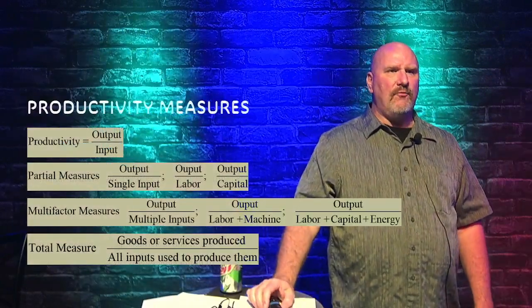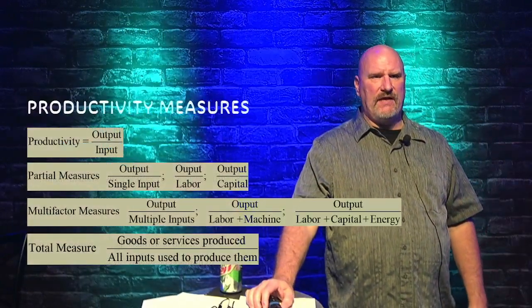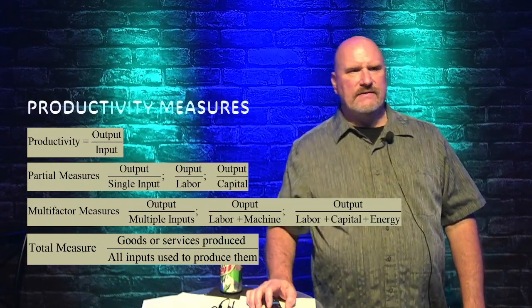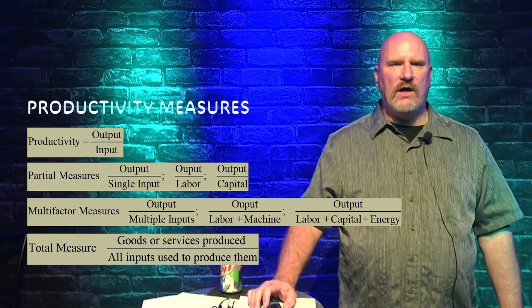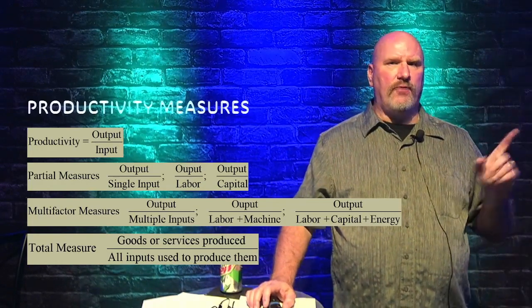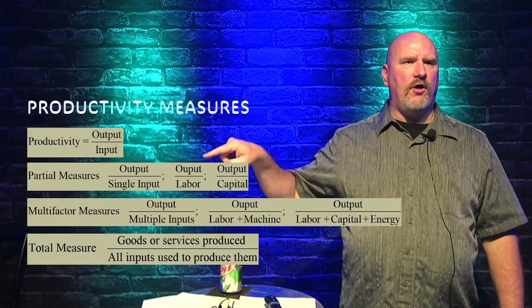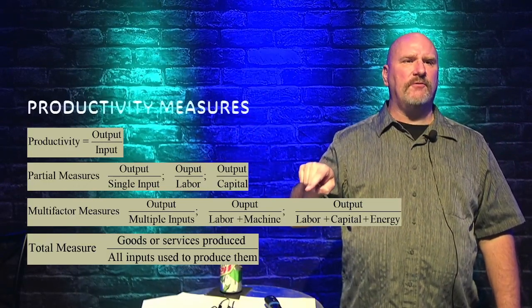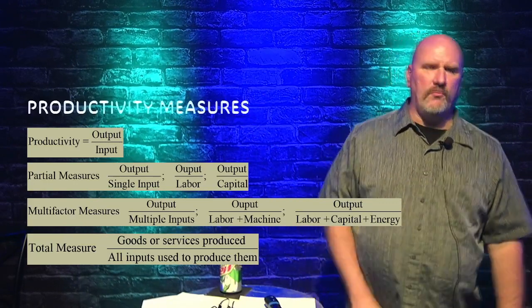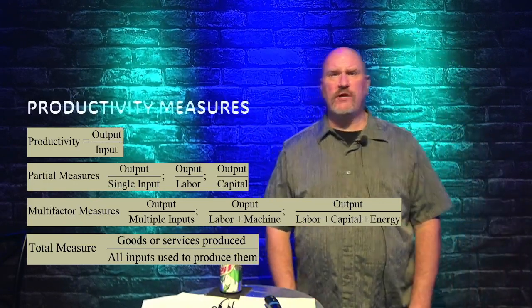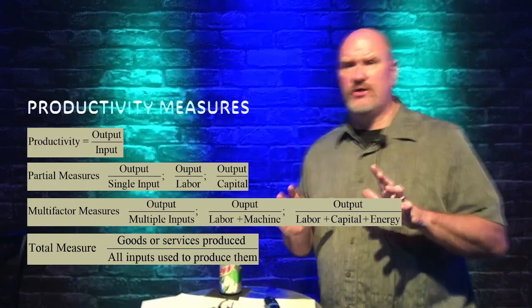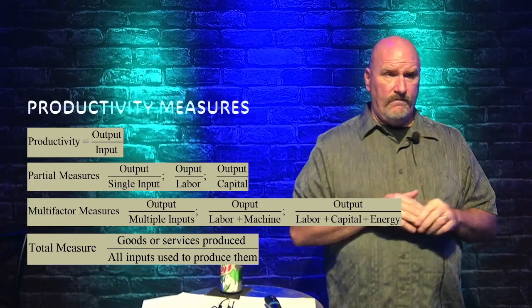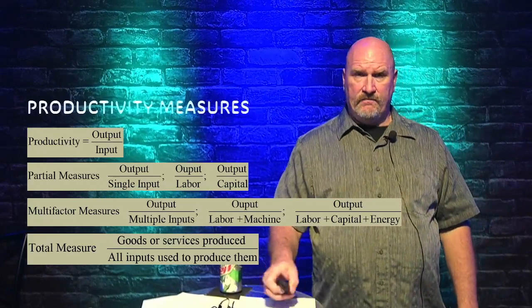We can measure productivity. In your textbook there are formulas showing how to calculate it. There are partial measures, multi-factor measures, and total measures. Be sure to get into your textbook and know how to do these calculations. Output equals the goods and services produced — what is being produced. Input is the resources used in production: labor, materials, energy, and so on.